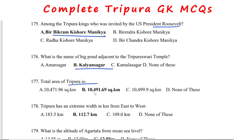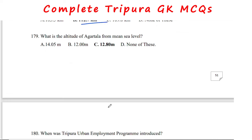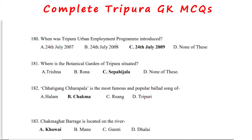Total area of Tripura is 10,491.69 square kilometers. The extreme width of Tripura from east to west is 112.7 km. The altitude of Agartala from mean sea level is 12.8 meters. The Tripura Urban Employment Program was introduced on 24th July 2009. The botanical garden of Tripura is situated at Sipahijola.